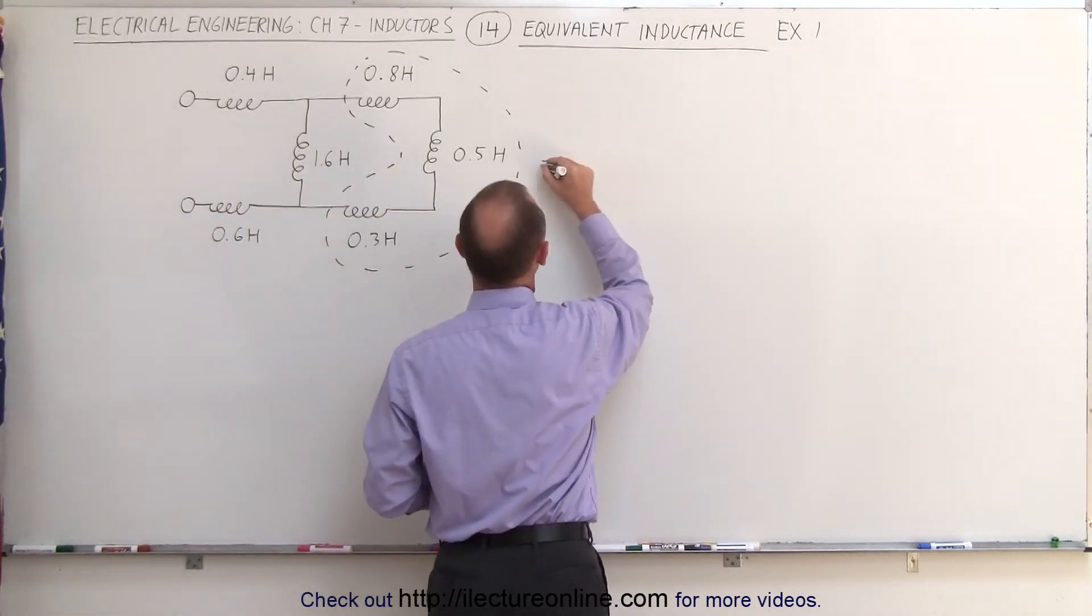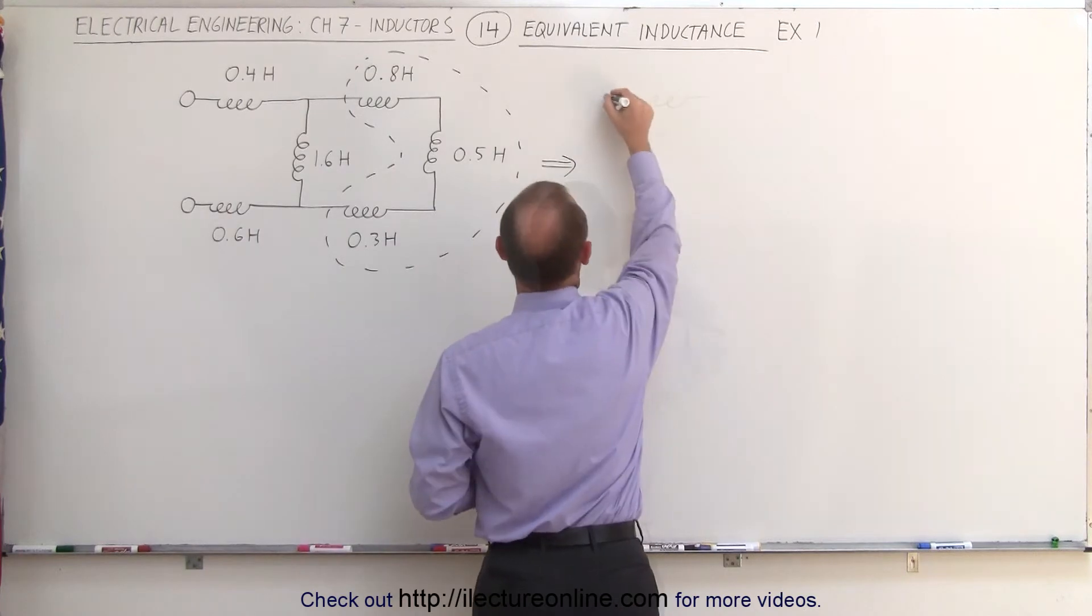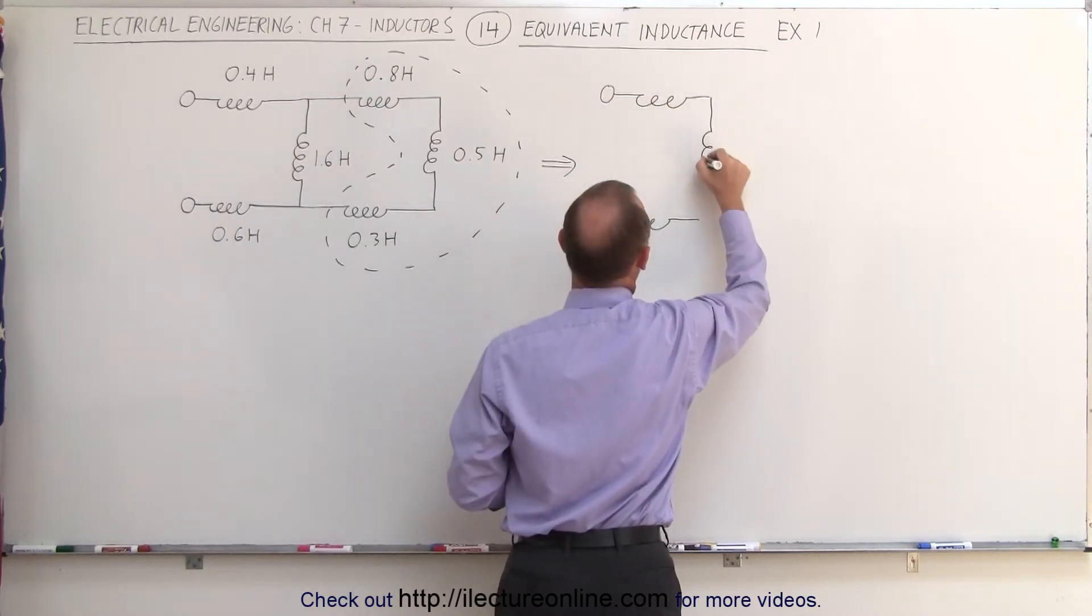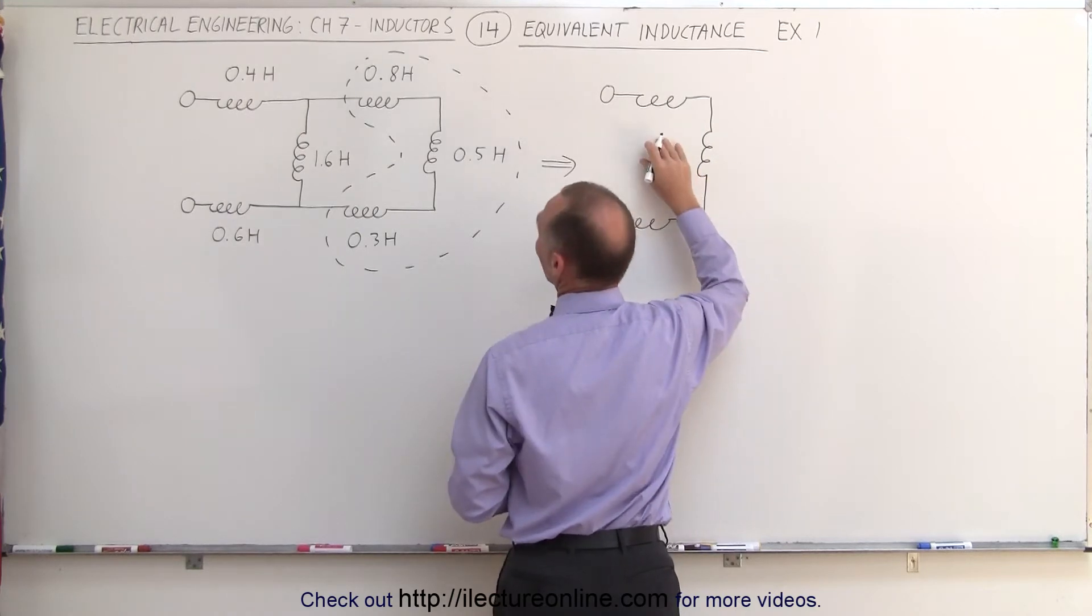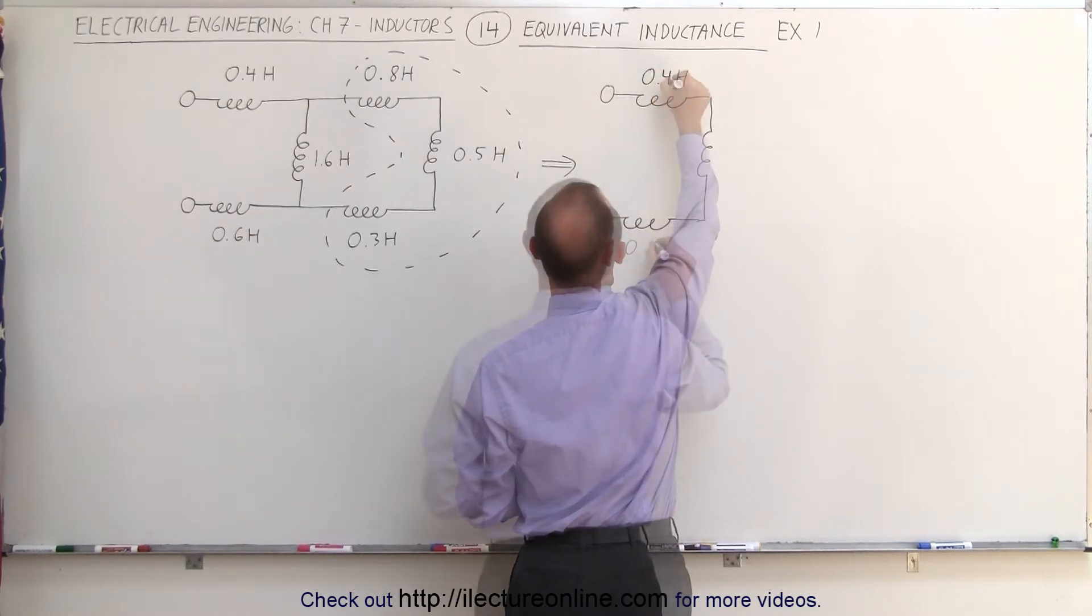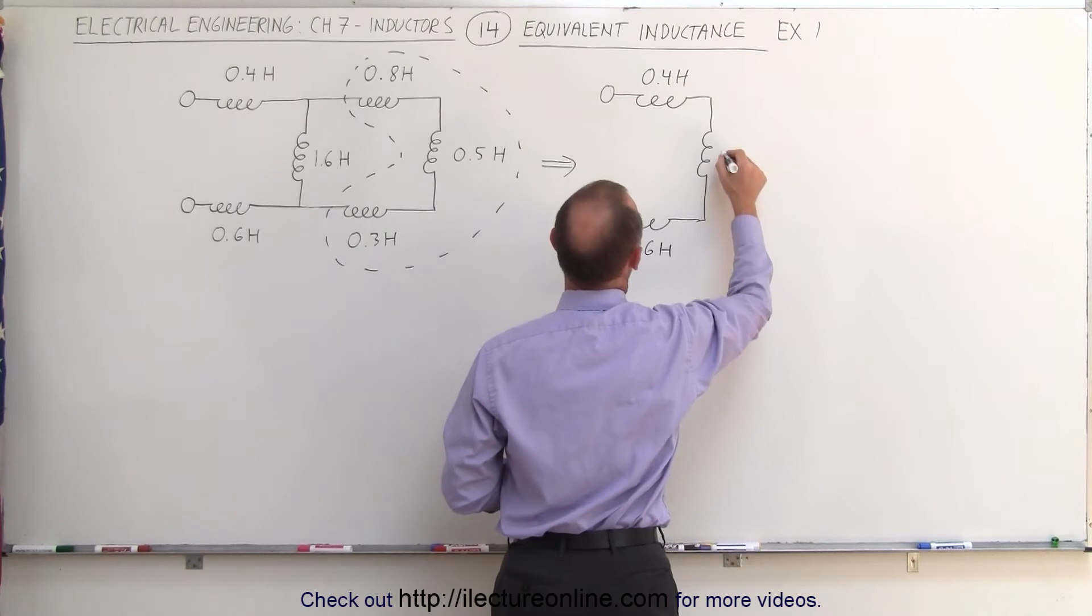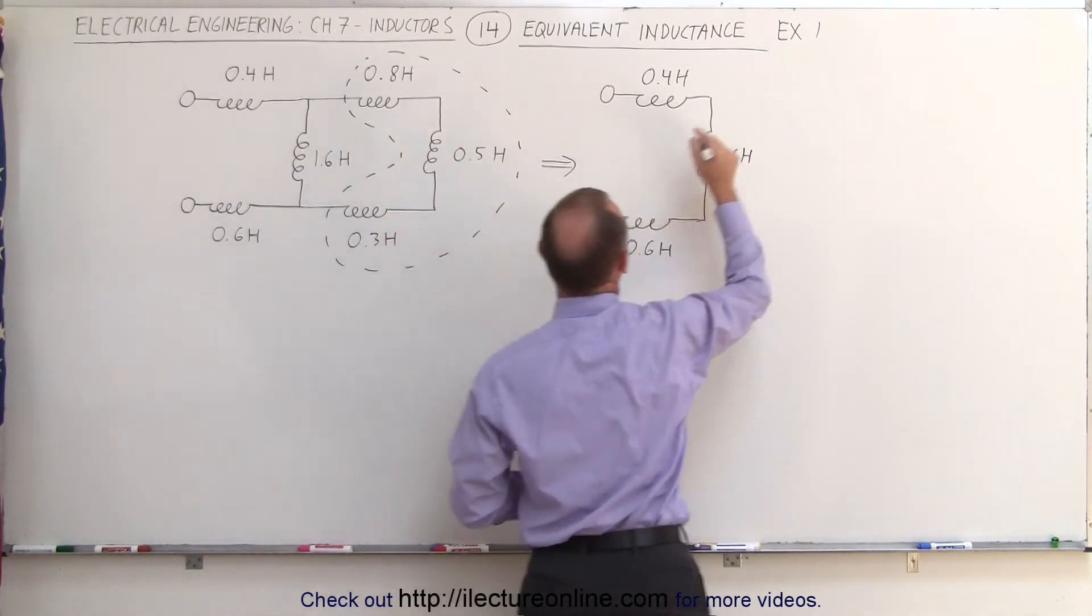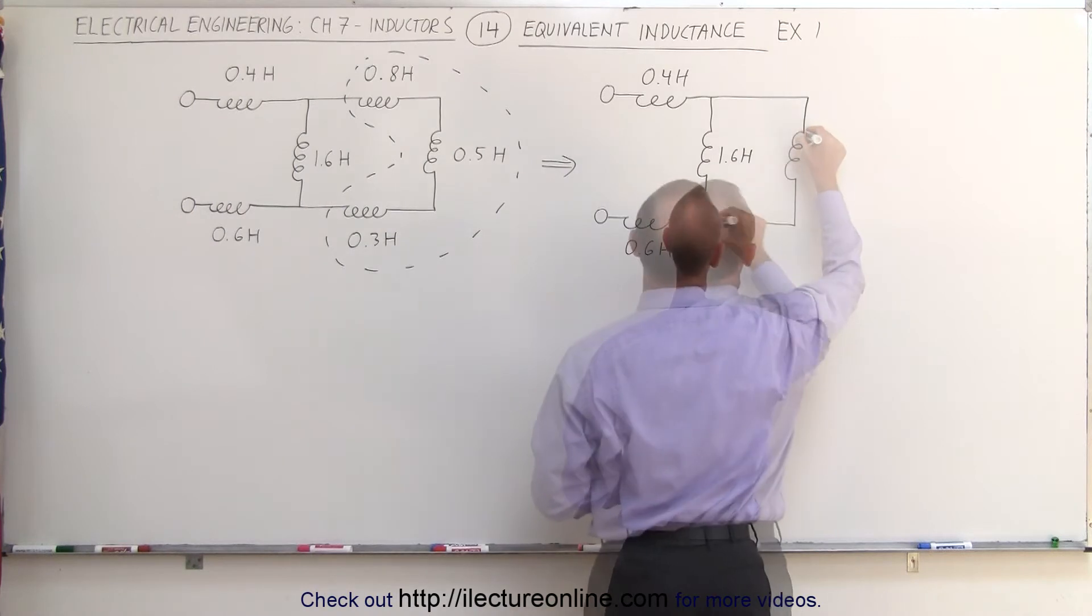We can then draw the equivalent circuit. Still have this inductor here, and this one. So these three are still intact, unchanged, 0.4 Henrys for this one, and 1.6 Henrys for this one. And those three now will be combined into a single inductor.